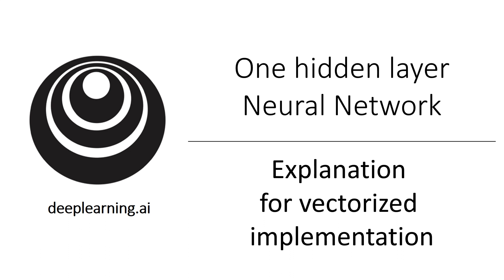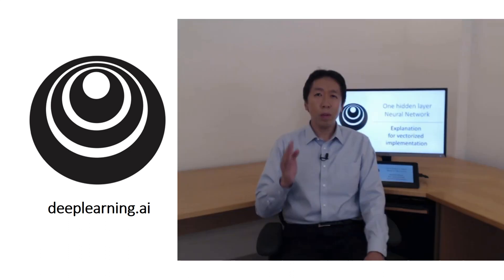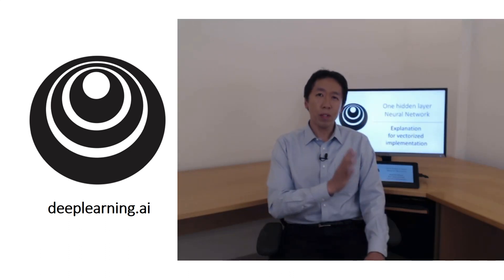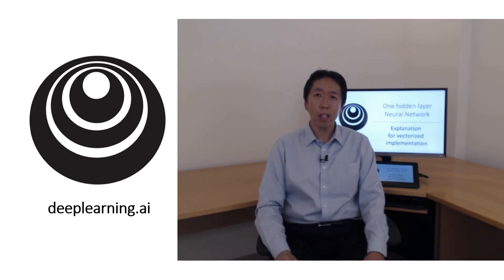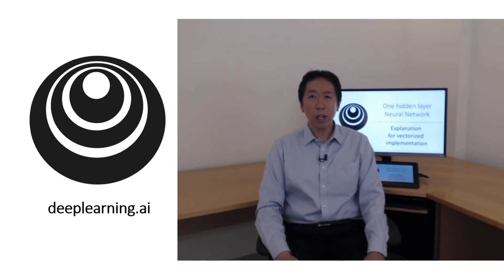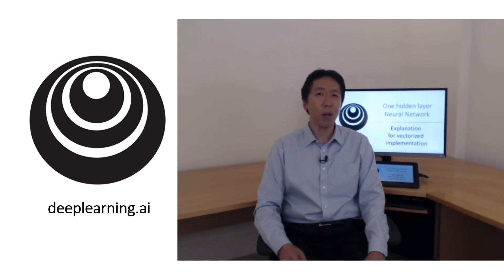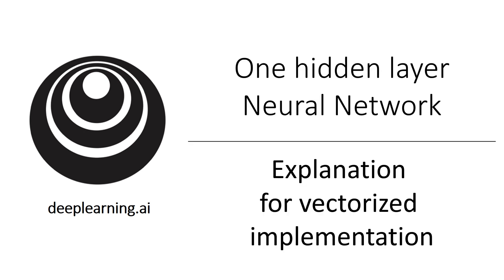In the previous video, we saw how with your training examples stacked up horizontally in the matrix X, you can derive a vectorized implementation of forward propagation for your neural network. Let's give a bit more justification for why the equations we wrote down is a correct implementation of vectorizing across multiple examples.